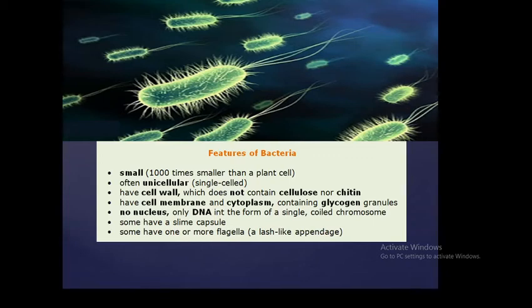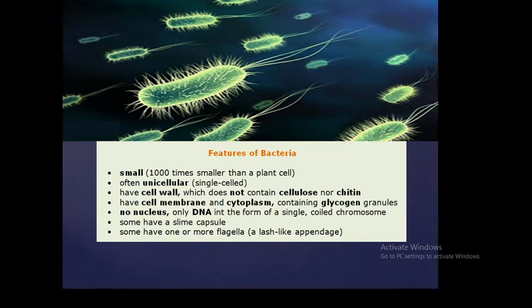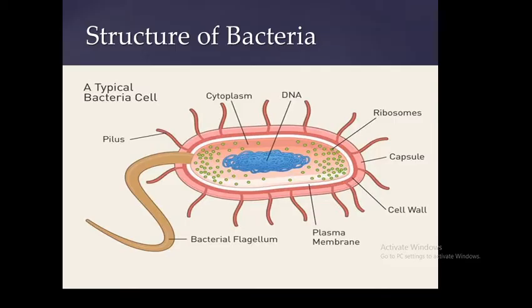Today I'm going to talk about bacteria, the structure of bacteria, and compare it with the plant cell and animal cell. Bacteria is very small — it is unicellular, a single cell. It has a cell wall which does not contain cellulose or chitin. It has a cell membrane and cytoplasm that contains glycogen granules. There is no nucleus — only DNA in the form of a single-coiled chromosome. It may have a slim capsule and one or more flagella.